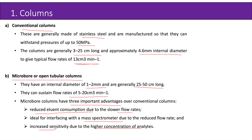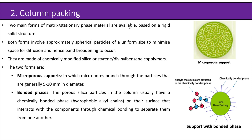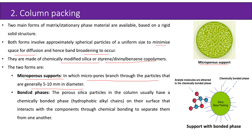The next step is column packing. Two main forms of matrix or stationary phase materials are available based on a rigid solid structure. Both involve approximately spherical particles of uniform size to minimize space for diffusion and hence band broadening. They are made of chemically modified silica or styrene-divinylbenzene copolymers. The two forms are: microporous supports, in which micropores branch through the particles that are generally 5–10 mm in diameter, and bonded phase, in which the porous silica particles have chemically bonded hydrophobic alkyl chains on the surface that interact with components through chemical bonding to separate them.